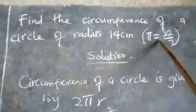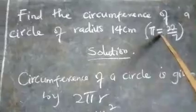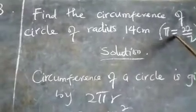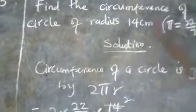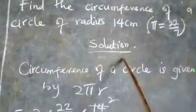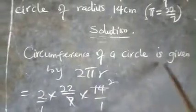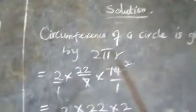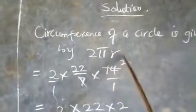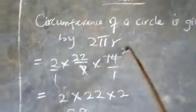Even if we are not given this, we should be able to know that pi is equal to 22 all over 7. Now, the solution. Circumference of a circle is given by the formula 2 pi r. This is the formula 2 pi r.